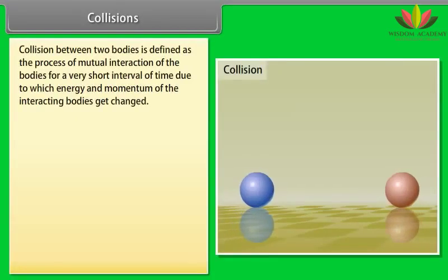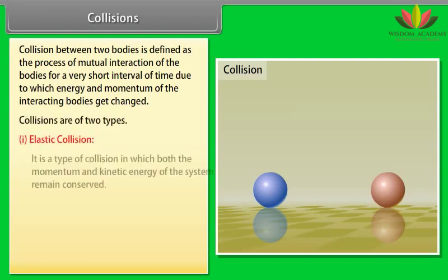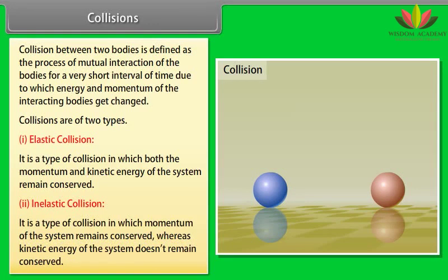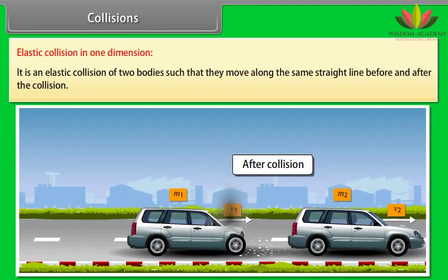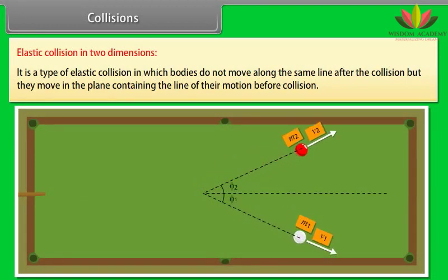Collisions. Collision between two bodies is defined as the process of mutual interaction of the bodies for a very short interval of time due to which energy and momentum of the interacting bodies get changed. Collisions are of two types: number 1, elastic collision, it is a type of collision in which both the momentum and kinetic energy of the system remains conserved. Number 2, inelastic collision, it is a type of collision in which momentum of the system remains conserved whereas kinetic energy of the system doesn't remain conserved. Elastic collision in one dimension: it is an elastic collision of two bodies such that they move along the same straight line before and after the collision. Elastic collision in two dimension: it is a type of elastic collision in which bodies do not move along the same line after the collision but they move in the plane containing the line of their motion before collision.